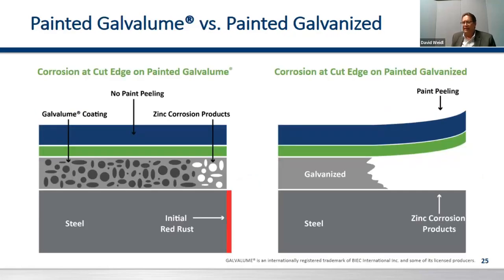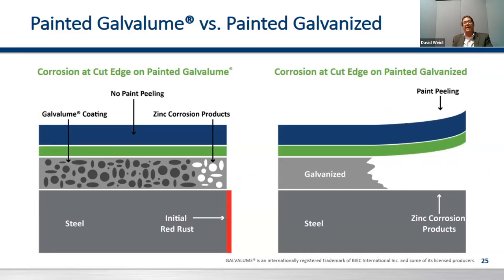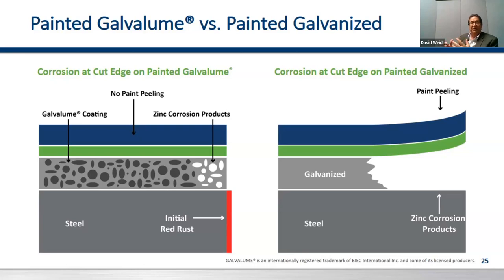With the new alloys, the dynamic changes. You'll have initial red rust, but that rust is pretty much limited to the thickness of the metal itself. So if you have a 24-gauge (0.024) panel, that's going to be the depth of your initial red rust.